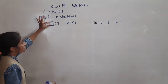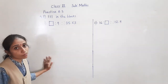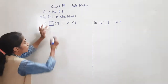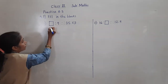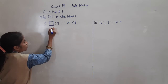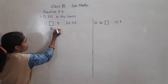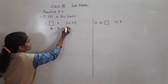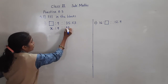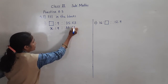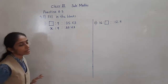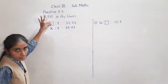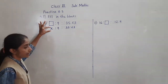So what is given? See here, a blank box. In the place of blank box, what will we write? X. See here, we don't know what number is there, so we take X. So X is to 9 and 35 is to 63.